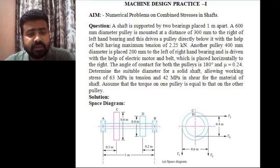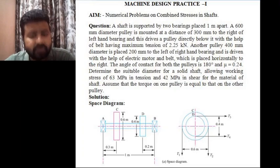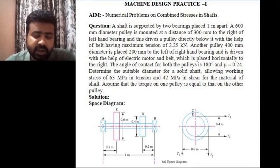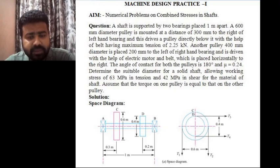As we can see in the space diagram, there are two bearings A and B. A is the left hand bearing and B is the right hand bearing, placed 1 meter apart. There is a pulley of 600 mm diameter placed to the right of the left hand bearing at a distance of 300 mm, named pulley C. There is another pulley of 400 mm diameter placed to the left of the right hand bearing at a distance of 200 mm, named pulley D. Pulley C is driving another pulley placed directly below it.